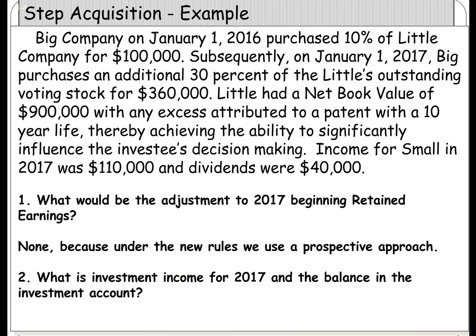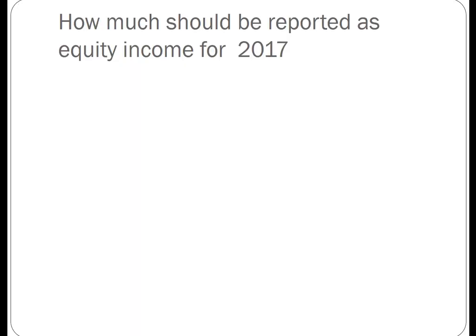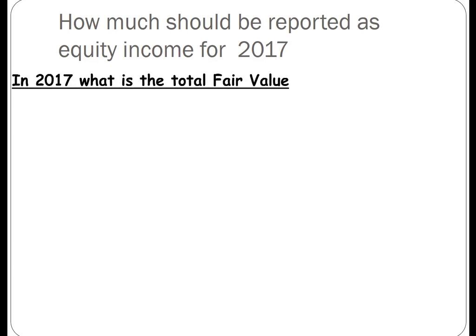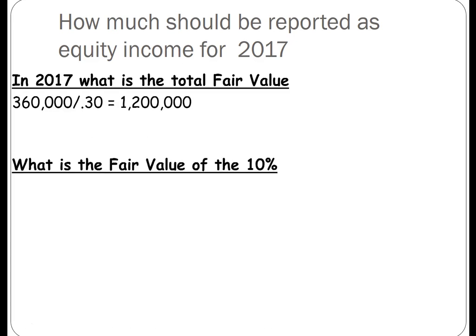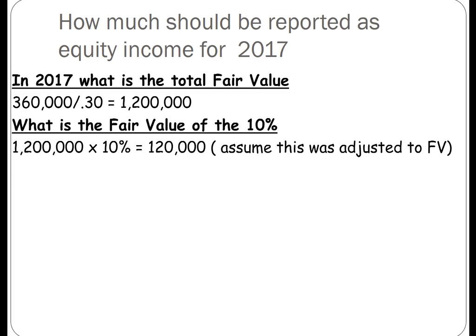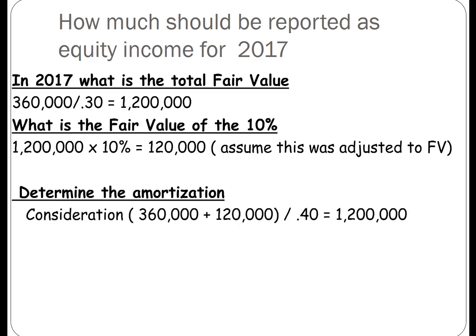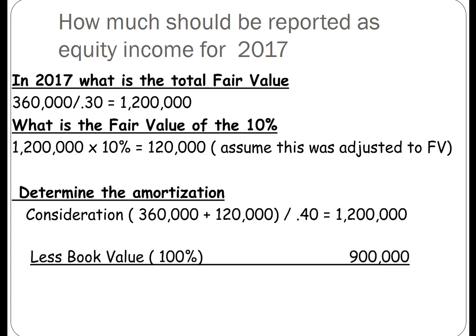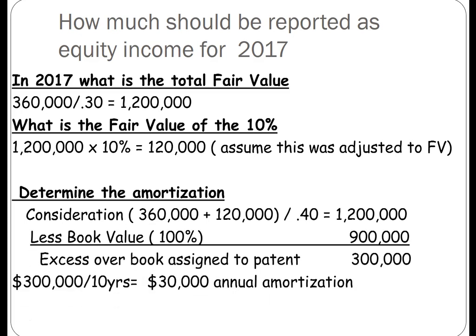Two questions: what is the investment income for 2017 and the balance in the investment account, and how much should be reported as equity income for 2017? In 2017, the total fair value was $1.2 million, which means the 10% is worth $120,000. Now we can determine our amortization. Our consideration is $360,000 plus $120,000 — because we assume the 10% was already adjusted to fair market value — divided by our 40% ownership, which means 100% is $1.2 million, less the book value of $900,000, giving us excess over book assigned to the patent of $300,000.